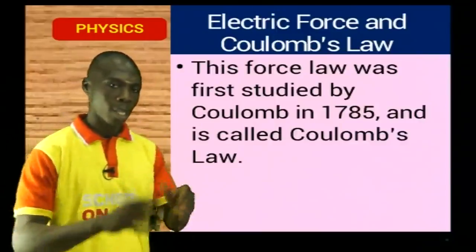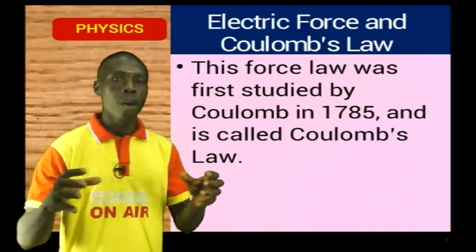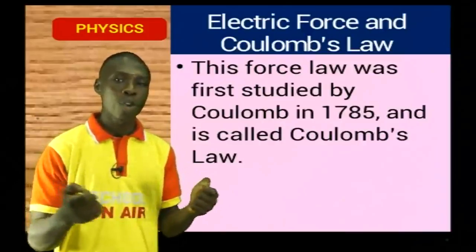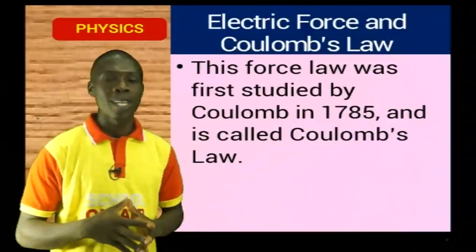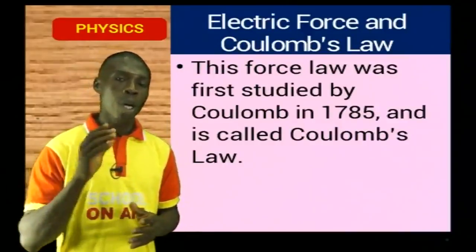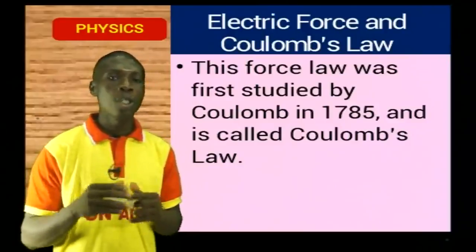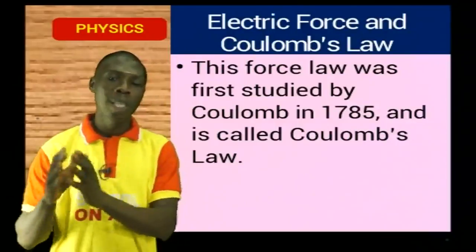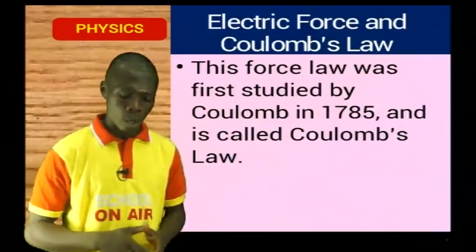Coulomb's Law states that the force of attraction between two charges placed in an electric field is directly proportional to the products of the charges and inversely proportional to the square of their distance apart. So you have F proportional to Q1Q2 / R², where the proportionality sign changes to F = KQ1Q2 / R².